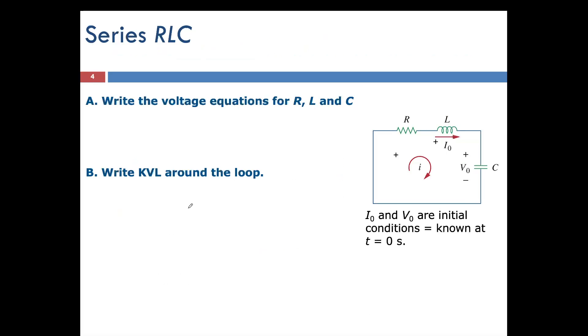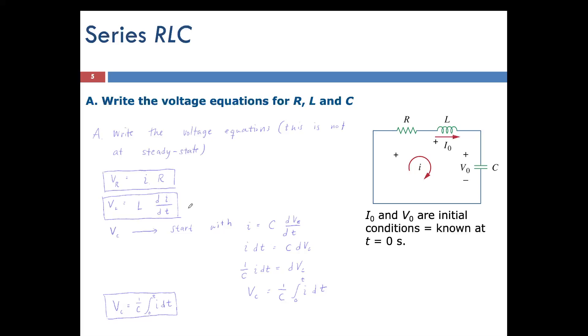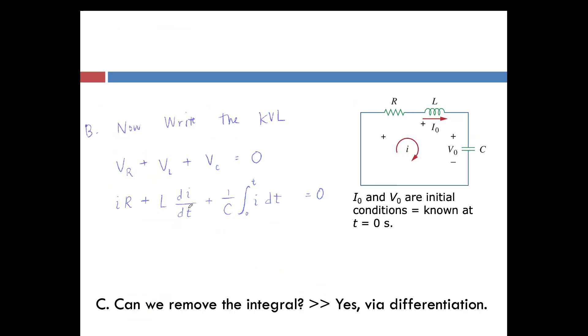First step, let's write voltage equations for R, L, and C. We'll use Ohm's law and our knowledge of inductors and capacitors. You should have learned these when studying RL and RC circuits. Then we're going to write a KVL just like many of our more simple circuits.